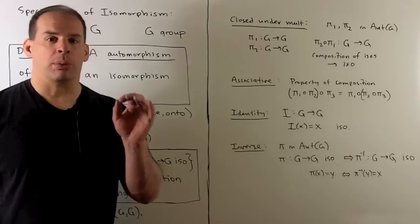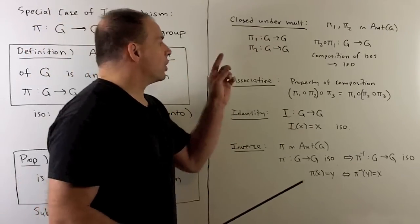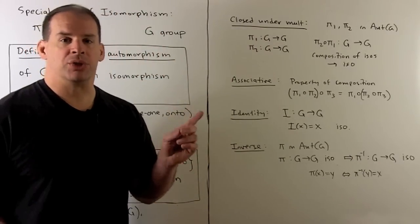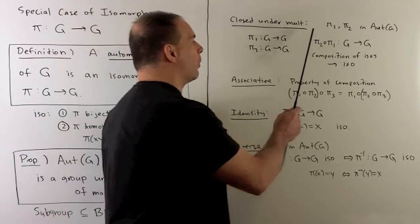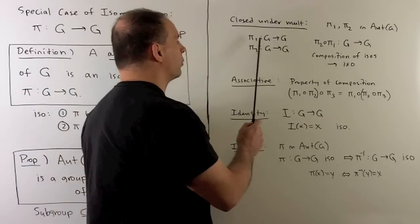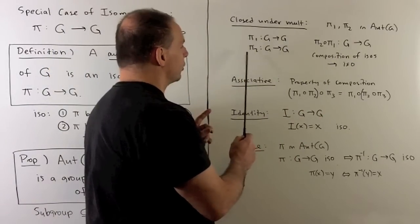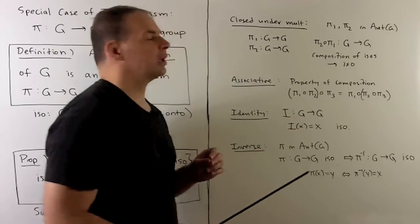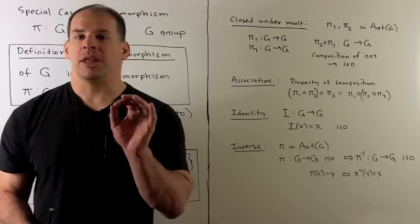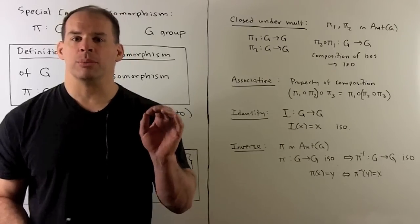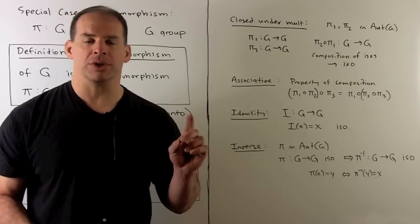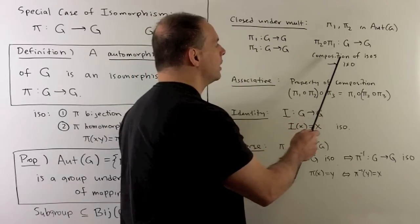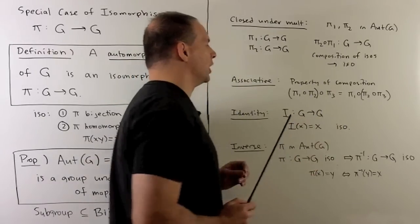We have four properties to verify. First, closure under multiplication. We assume we have two automorphisms pi_1 and pi_2, both going from G to G. Taking their composition, pi_2 composed with pi_1 — we saw last time that a composition of isomorphisms is another isomorphism, so pi_2 composed with pi_1 is an automorphism of G.